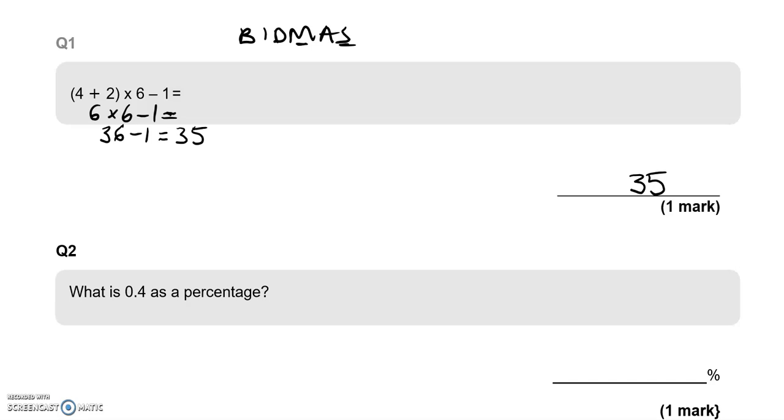What is 0.4 as a percentage? 0.4, that looks very similar to this. And if there is no digit after that, we put a 0. So that is like 40 pence, which is 40%. So don't confuse this with 0.04 because that would be 4%.